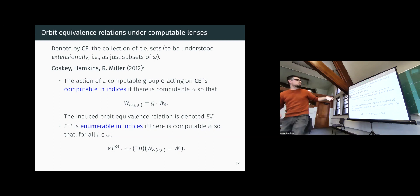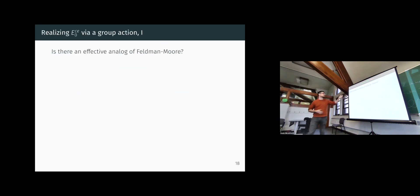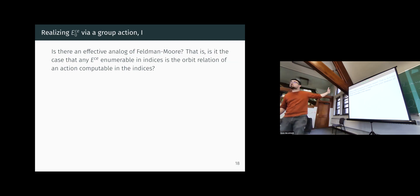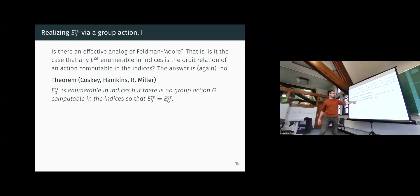The natural question is whether these two effectivizations align. In the classical case they do — that's essentially the content of Feldman-Moore. But here, the answer is no. In fact, e0_C is enumerable in the indices, but there is no group action with computable indices that realizes it, even up to identity.